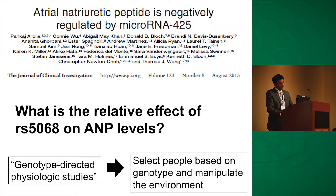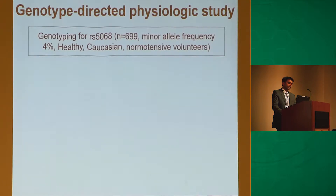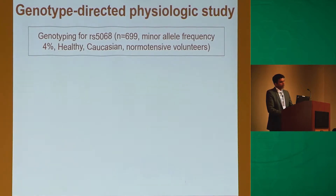Not until now — five years and counting — have many genotype-directed physiologic studies been done, which is a unique way to get to physiological function. A genotype-directed physiologic study was proposed. The idea was to recruit people based on genotype and manipulate their environment. We genotyped 700 people for this particular variant — all Caucasians, healthy and normotensive — because the original discovery by Dr. Wang and his colleagues was in a Caucasian population.